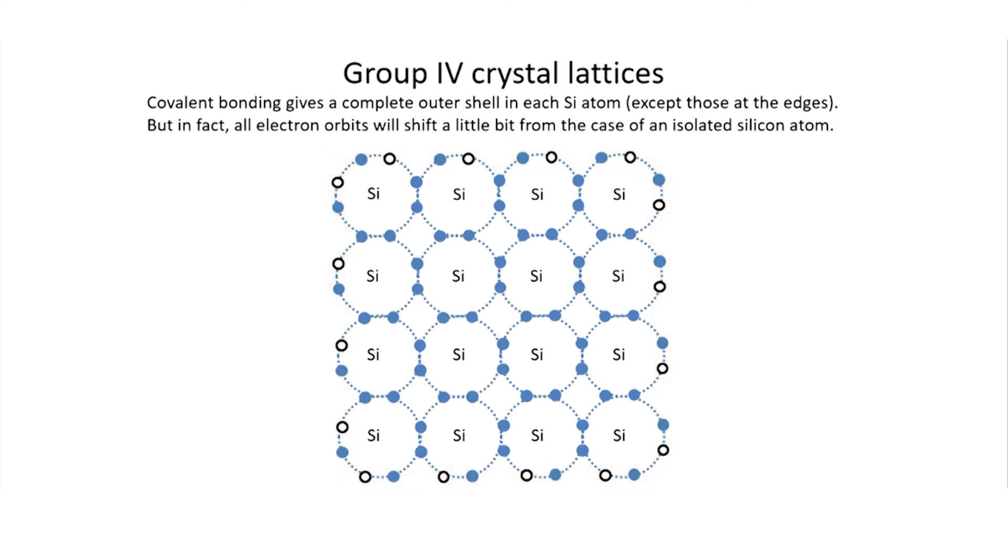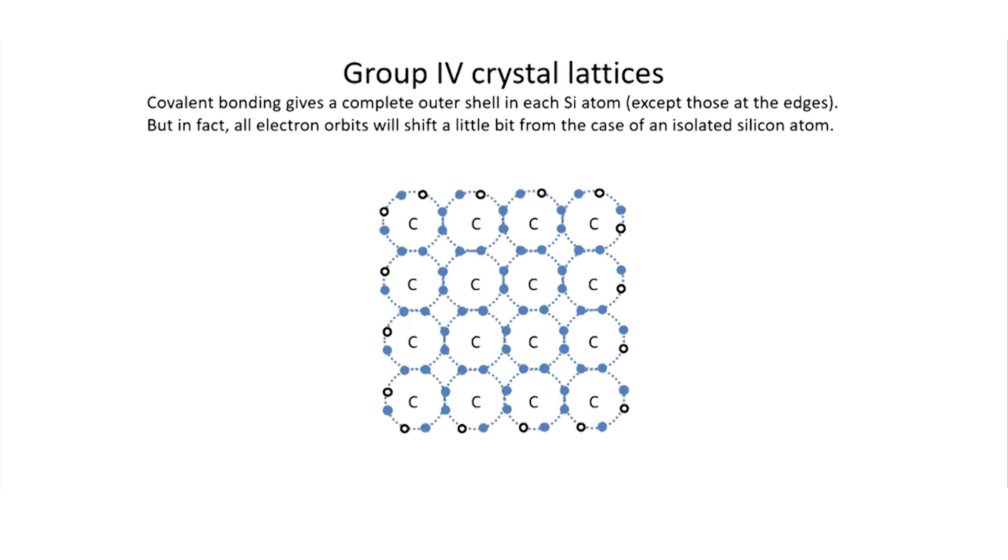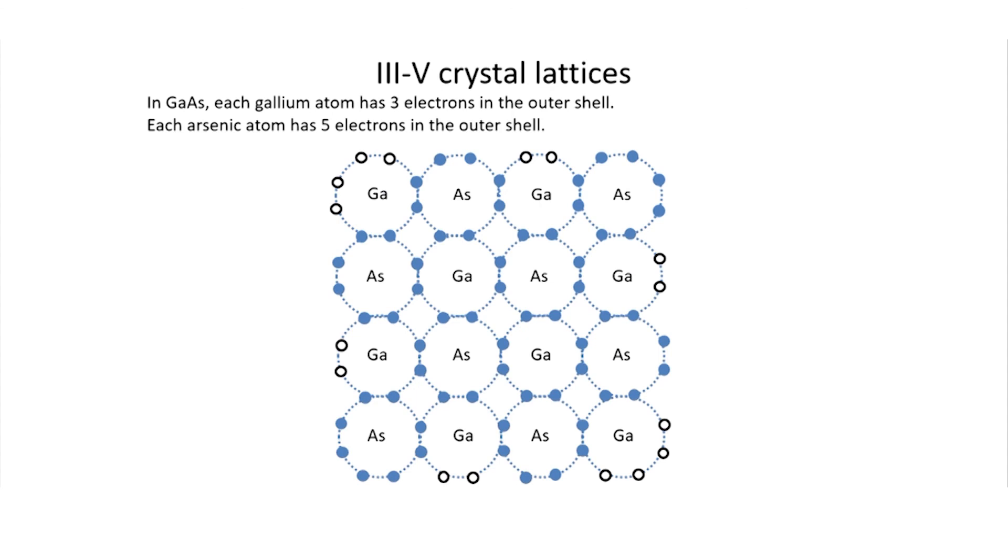The crystal structure here of silicon or diamond is very similar to that of germanium. It's also very similar to that of gallium arsenide, where you would have every other element either gallium or arsenic. In gallium arsenide, each gallium atom has three electrons in the outer shell. Each arsenic atom has five electrons in the outer shell. So combining them gives a full outer electron shell.